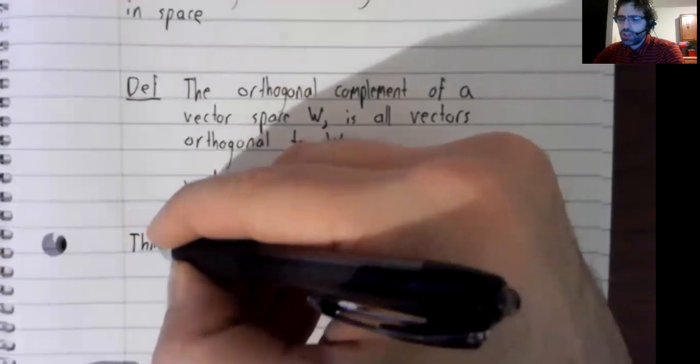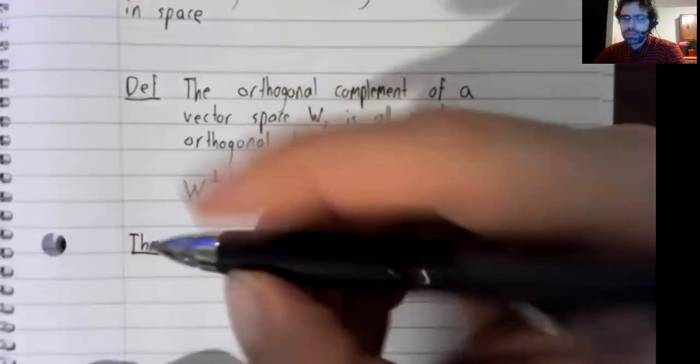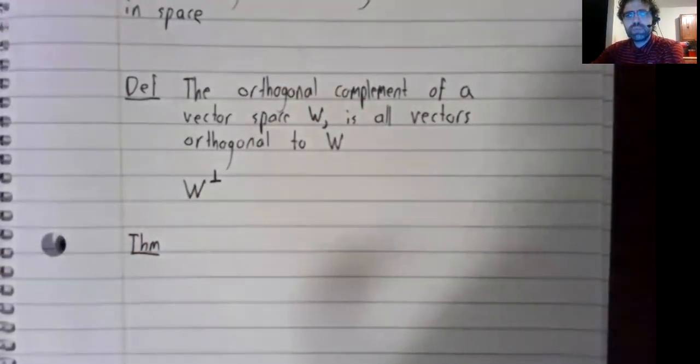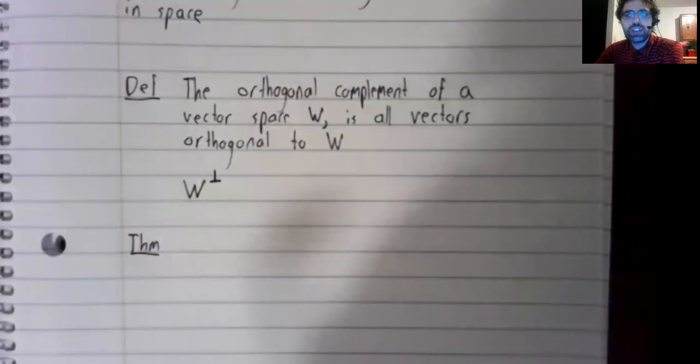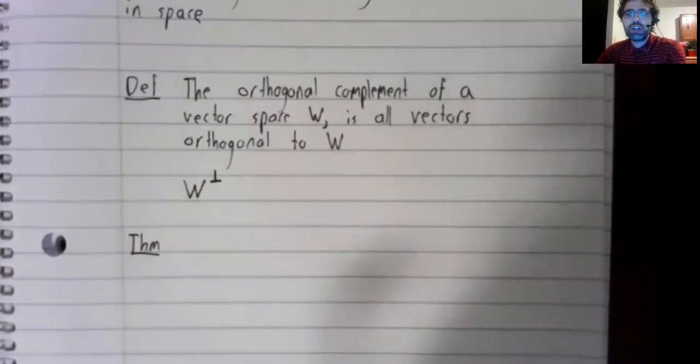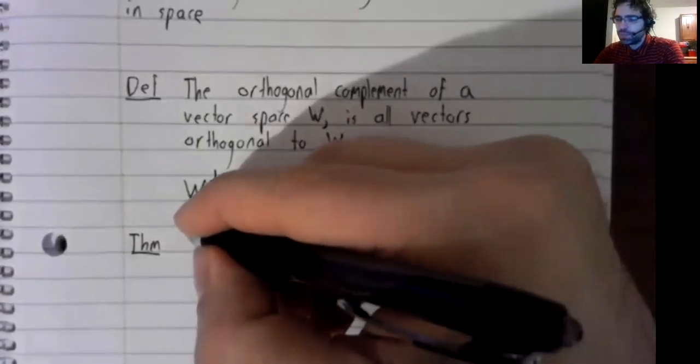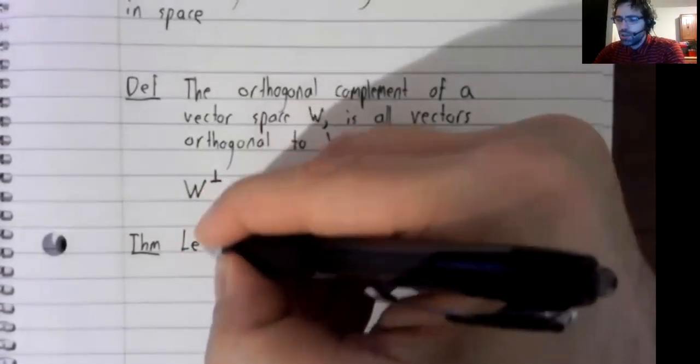Let's state a theorem. A vector space is going to have infinitely many vectors in it. So it's not as if you can manually check whether a vector is orthogonal to all of them. Fortunately, we don't have to.